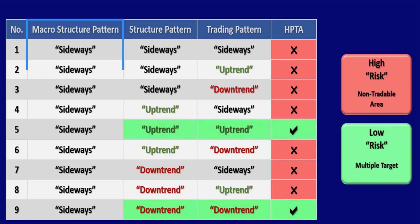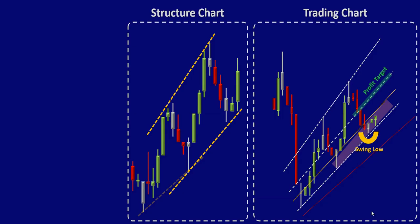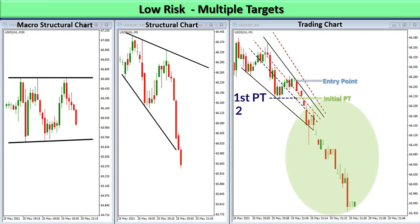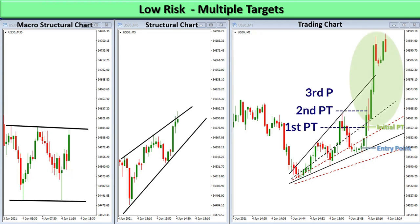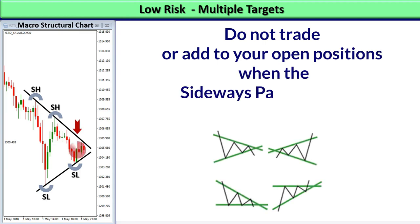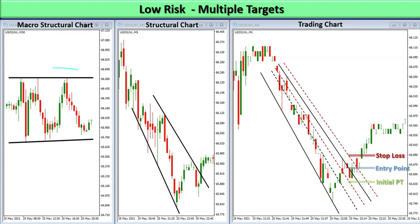Under the low risk category, the macro structure chart pattern could be sideways and the structural and trading charts are aligned in an uptrend or downtrend pattern. The potential to reach medium gains exists if the range of the macro structure sideways channel is wide enough to present tradable swings and you take position in the middle of the channel area. In this case, you could adapt to an exit strategy that allows you to set a limited number of targets with low expectations to catch runners. Only trade in the middle area of wide range sideways patterns, and do not trade or add to open positions when the sideways pattern range is narrow or the price is close to the dynamic support and resistance lines, as the sideways pattern may break any time against you.